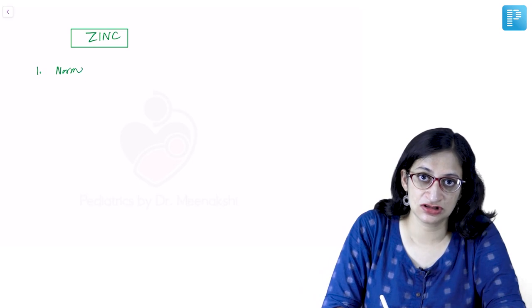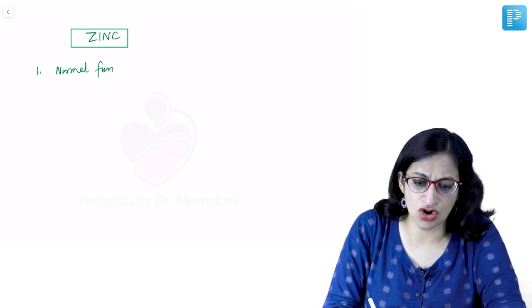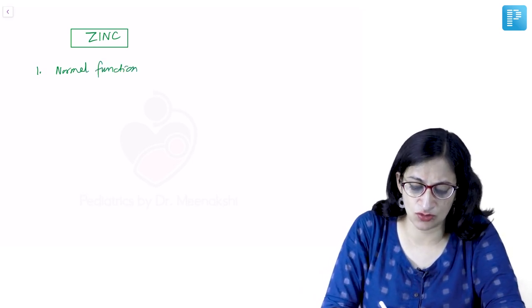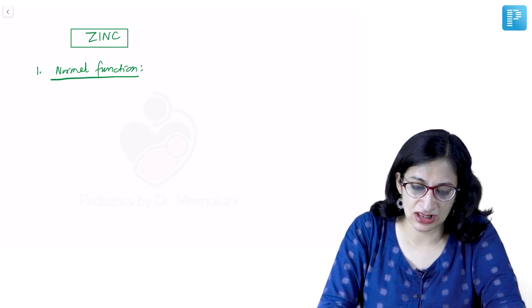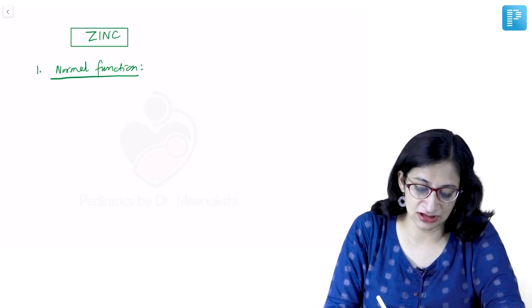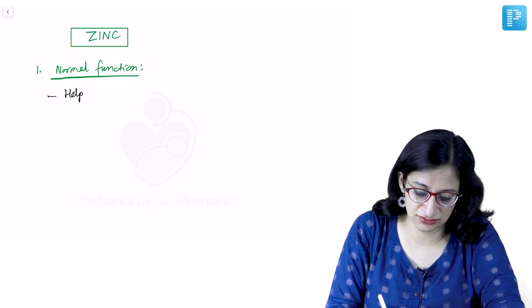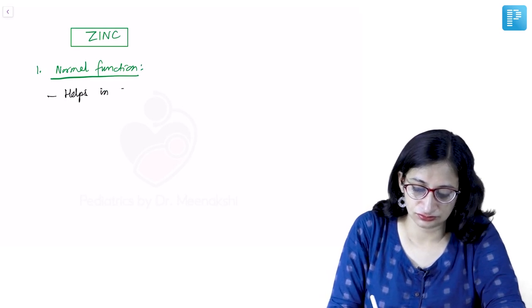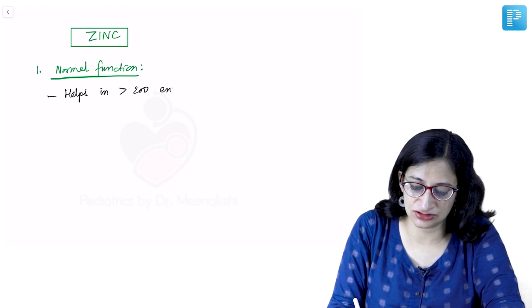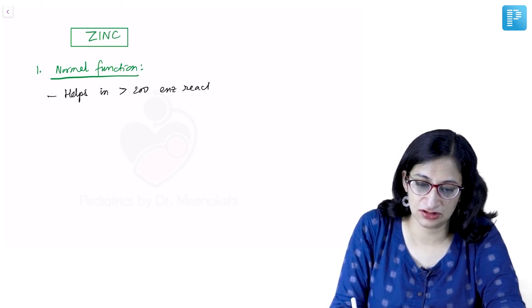Zinc basically, first let us see what is the normal function of zinc. So zinc helps in a lot of enzymatic reactions in our body, more than 200 they say. It helps in more than 200 enzymatic reactions in our body.